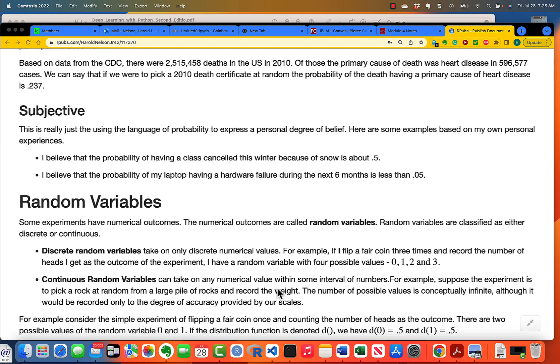A continuous random variable can take on any numerical value within some interval of numbers. For instance, I weigh myself every morning. And there's a range of about five pounds where I can get a value. Now, my scale only measures to an accuracy of 0.1 pounds. So, those are the only values I can possibly get. And conceptually, though, I can vary by much smaller amounts. It's just that my measuring device can't accept it. So, I consider the weight that I take every morning of myself to be a continuous random variable.